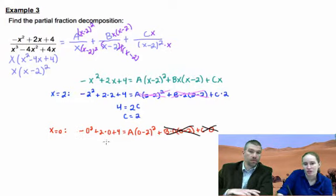This time these two go away and we're left with four on this side again. This will just be four. Negative two squared is four, four A, so divide that and that gives us A equals one.